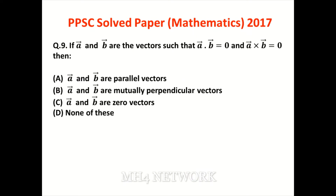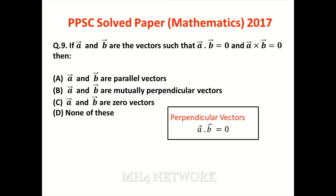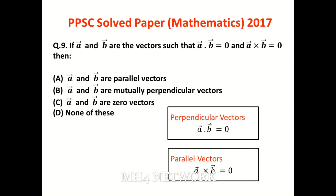If A and B are vectors such that dot product is zero AND cross product is zero: agar dot product zero ho toh vectors perpendicular hote hain, agar cross product zero ho toh parallel hote hain. Parallel hona aur perpendicular hona bilkul opposite concepts hain — dono ek saath sirf tab ho sakte hain jab dono zero vectors hon. Sirf zero vector ek saath parallel bhi hoga aur perpendicular bhi. Option C is the correct answer.